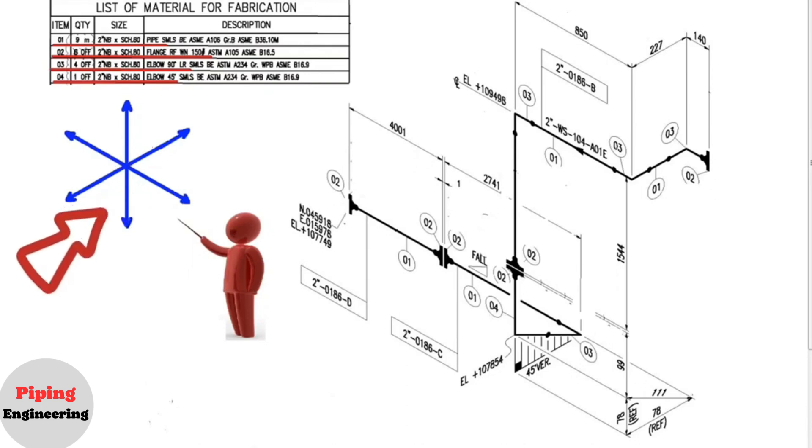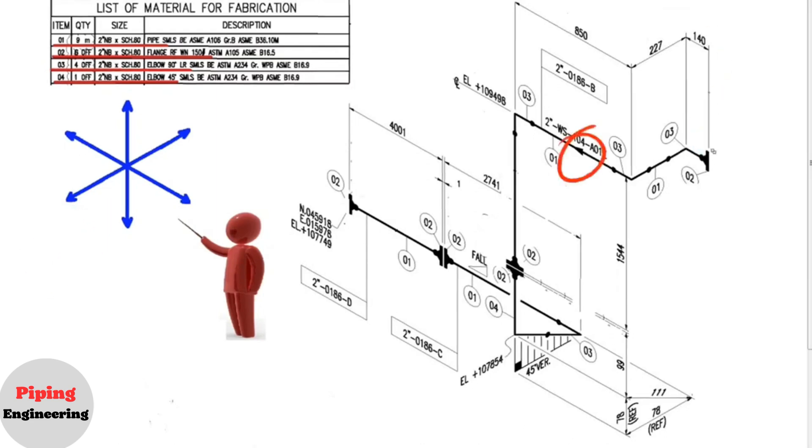Let's read the pipe drawing with the help of these directions. There is an arrow on the pipe, so let's read the pipe drawing in that direction.